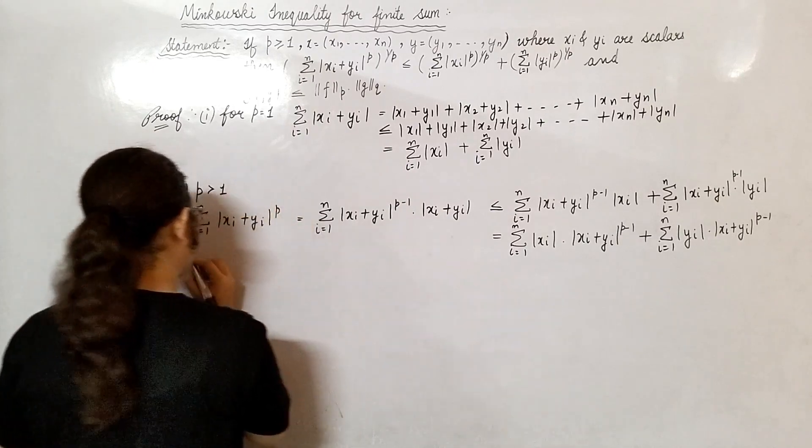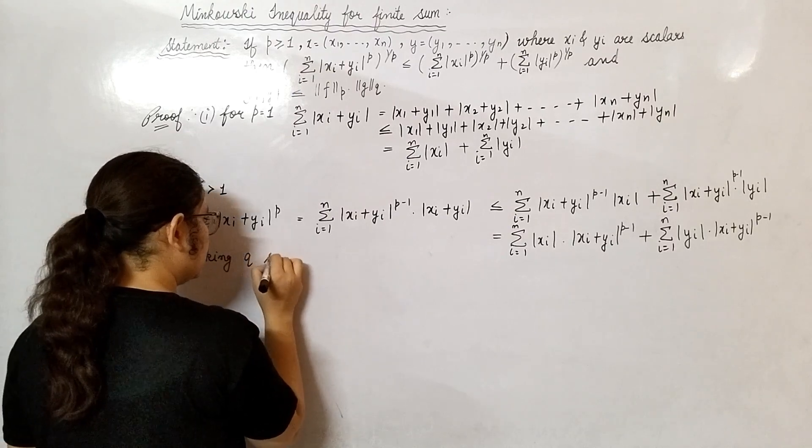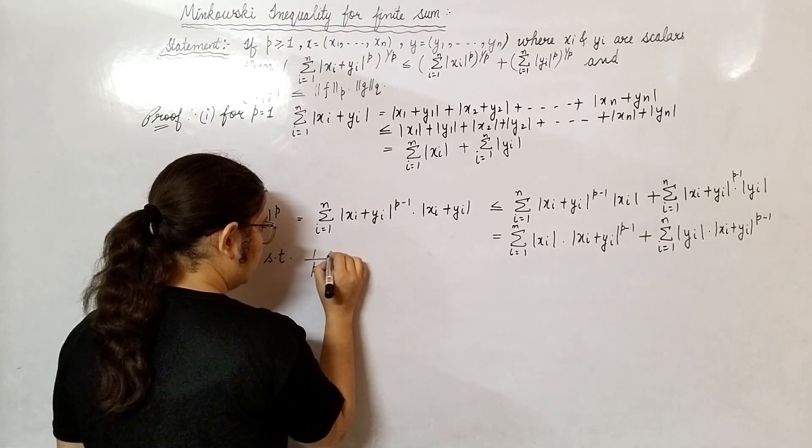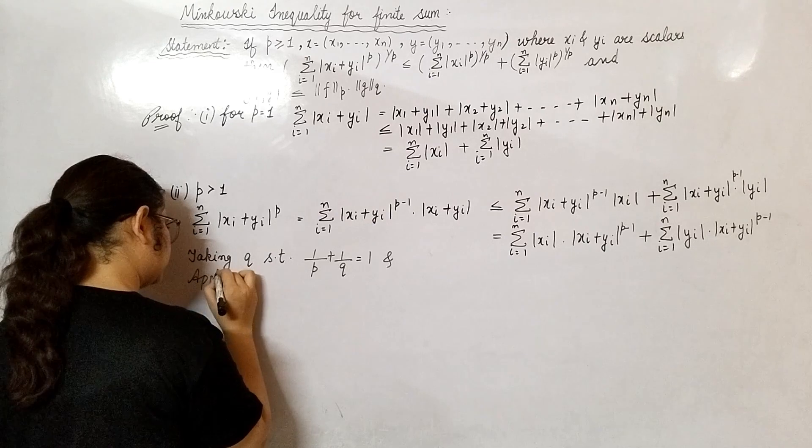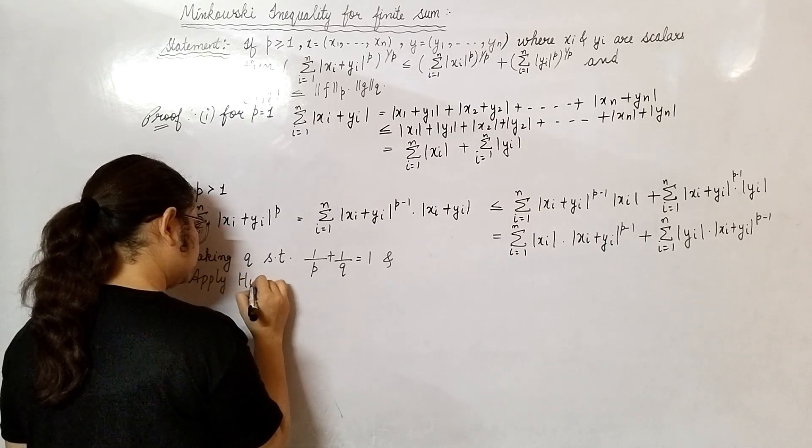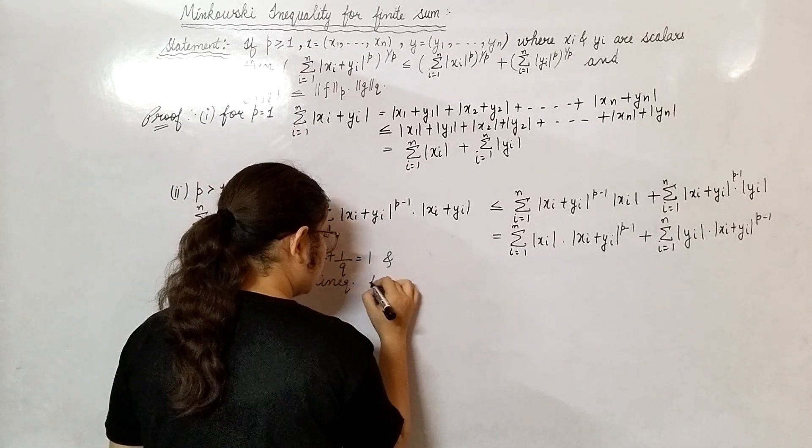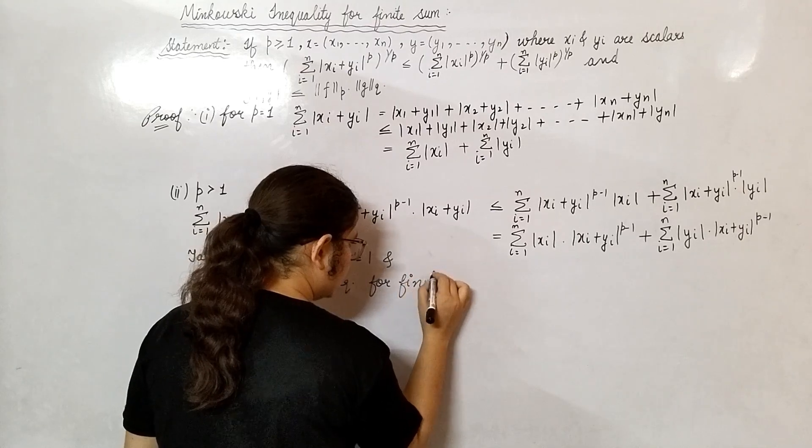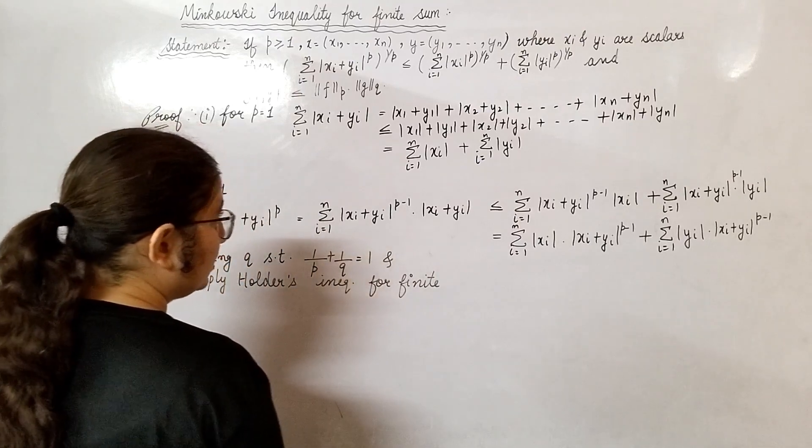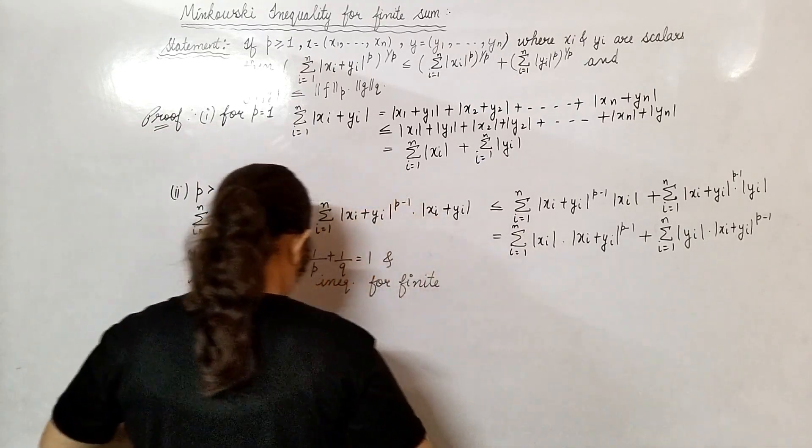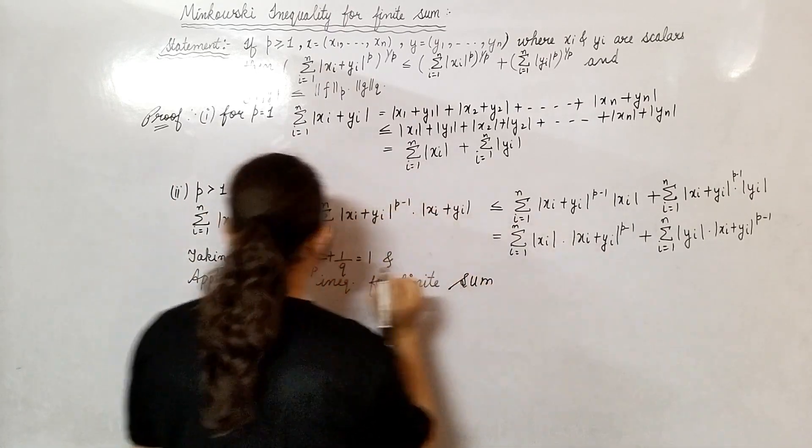Now what we have? Taking q such that 1/p + 1/q equals to 1. And apply Hölder's inequality for finite sum. The Hölder's inequality that we proved, that we proved for finite sum.